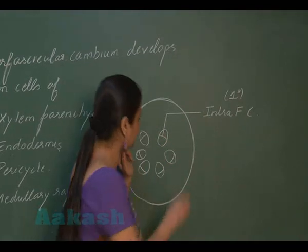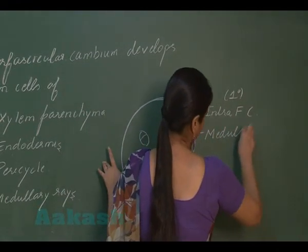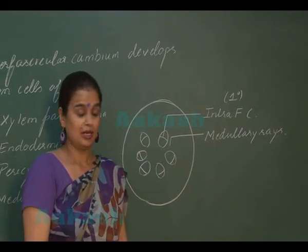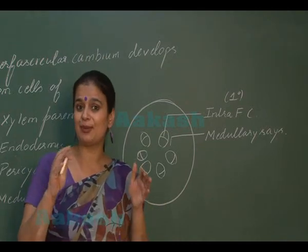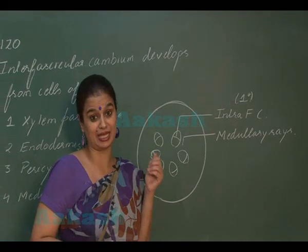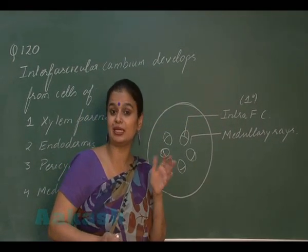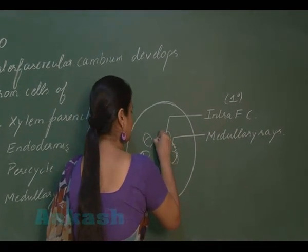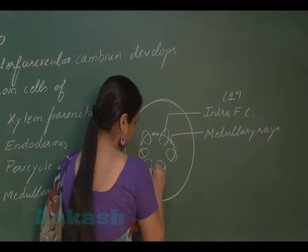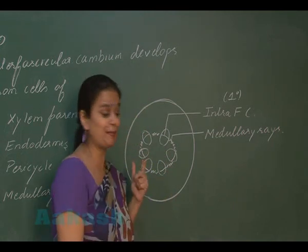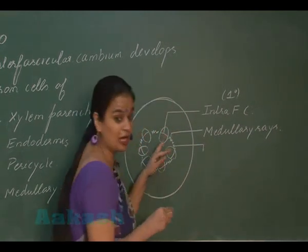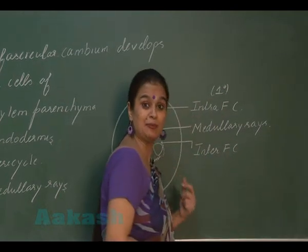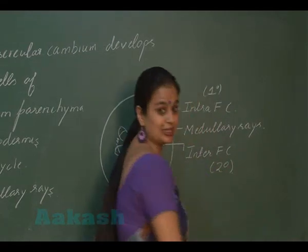Between the two vascular bundles, the tissue present is medullary rays. These rays are parenchymatous in nature. At mature stages, these parenchymatous cells regain their cell division capacity and convert into meristem. So between the vascular bundles, there is formation of cambium — this meristem formed between the vascular bundles is known as interfascicular cambium. Since it is formed at later stages, it is secondary in origin.